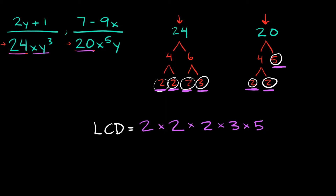Now we just have to find the LCD for the variables. We have two different variables — an x and a y on both sides. Starting with the x's: here we have x to the first power, and on this side we have x to the fifth. Just write down the bigger one — x to the fifth. For the y's: here we have y cubed, and on the other side just y to the first power, so the bigger one is y to the third power.